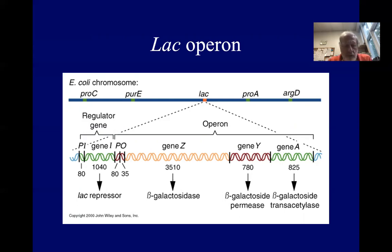So there's the promoter for the I gene, which codes the LAC repressor protein, 1040 base pairs in size, and then the promoter and operator for the operon.